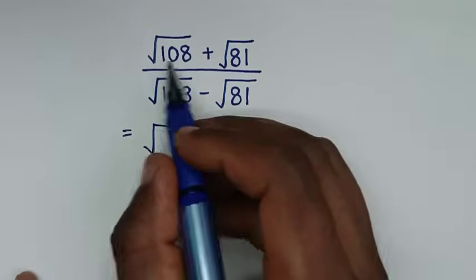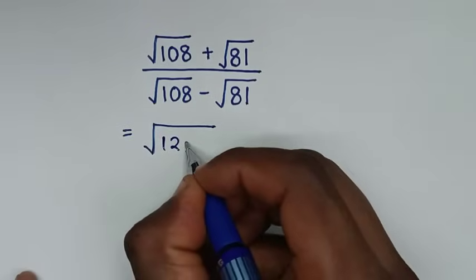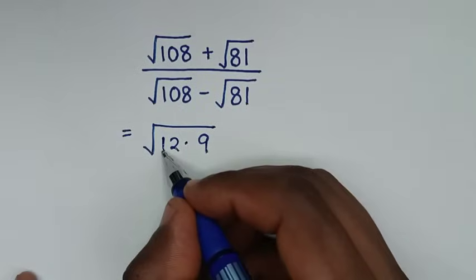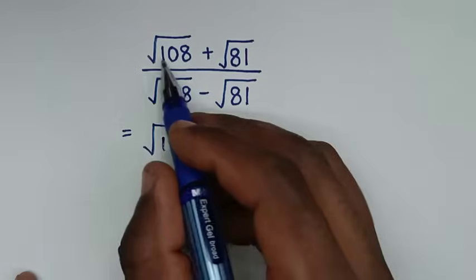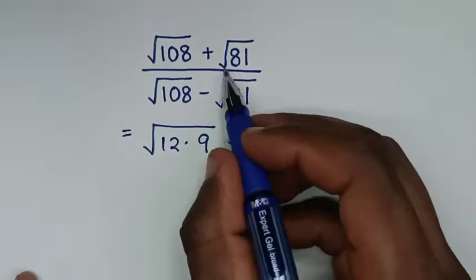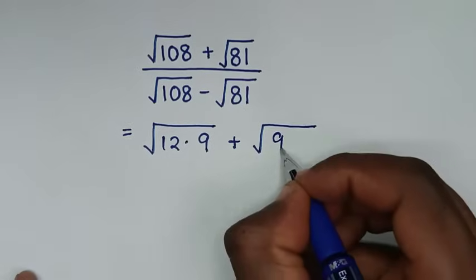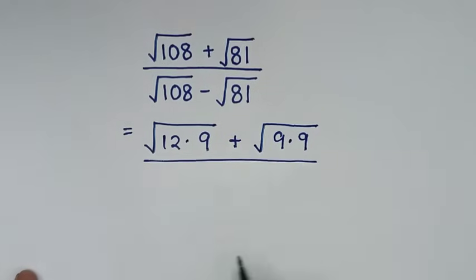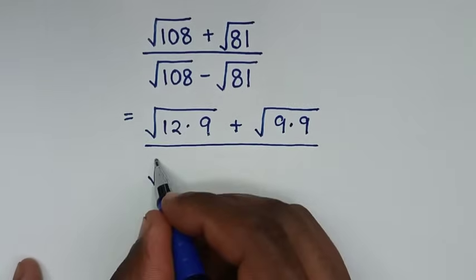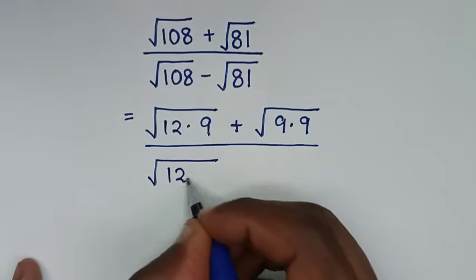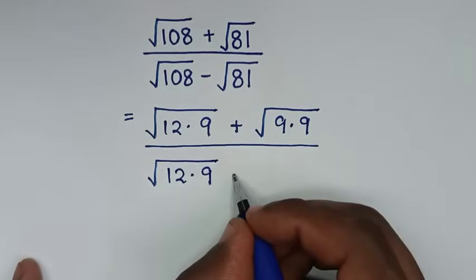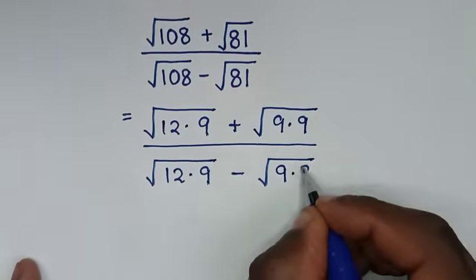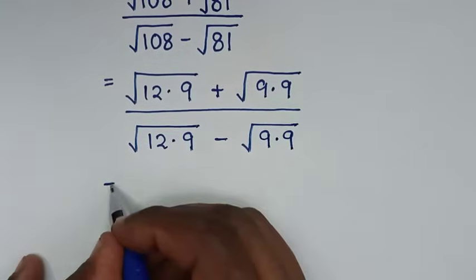Square root of 108 is the same as square root of 12 times 9, and square root of 81 is the same as square root of 9 times 9. In the denominator, square root of 108 is the same as square root of 12 times 9, and square root of 81 is the same as square root of 9 times 9.